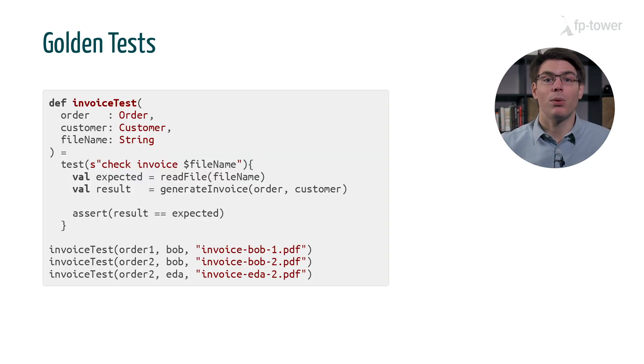For example, if the order is order 1 and the customer's name is Bob, we might expect to get the file invoice-bob-1.pdf. This is called a golden test and it's commonly used for checking the result of a public API. For example, we might want to verify that we didn't accidentally rename the key of a JSON document.